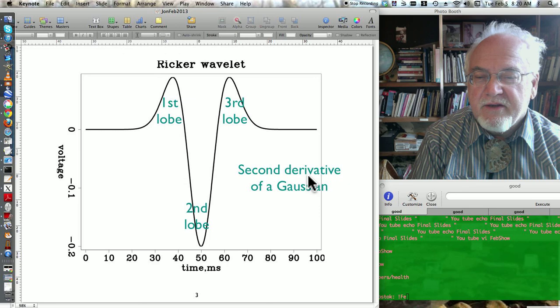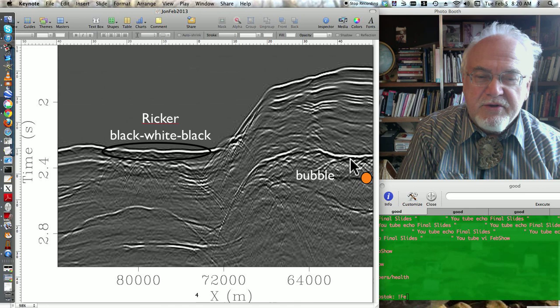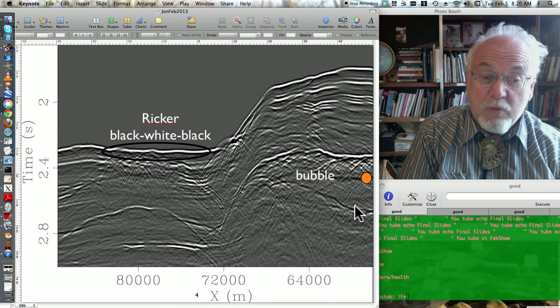Here's some field data, and if you look down here, you'll see black, white, black. That's a signature of a Gaussian. We see the same signature on the top of the salt here: black, white, black. And the bottom of the salt is not quite so easy to see. It's white, black, white.